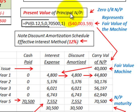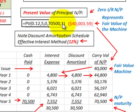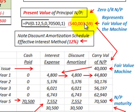For this zero interest bearing note, all we have to do is determine the present value of the principal. We have a twelve percent interest rate and the note is five years out with no interest payments — just one single payment at the end of seventy thousand five hundred dollars. Discounting that back at twelve percent, we come up with a present value of approximately forty thousand dollars. This represents the fair value of the machine at the current date.